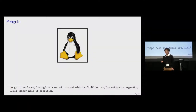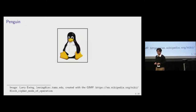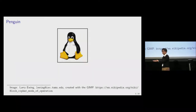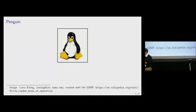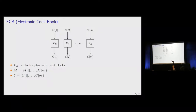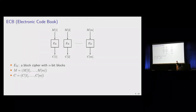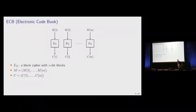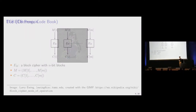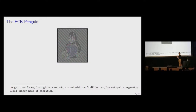This is a penguin — a famous one. Assume that we want to encrypt this image with the ECB mode of a block cipher. We have a block cipher Ek with n-bit blocks, and the image of the penguin is broken into blocks M1 through MM, which are encrypted individually to obtain the ciphertext. The result is the ECB penguin, and we vaguely see the shape of the penguin.